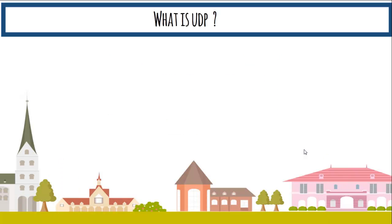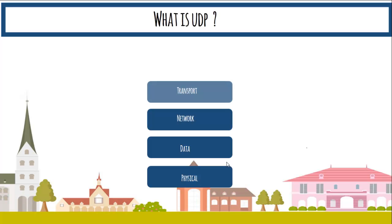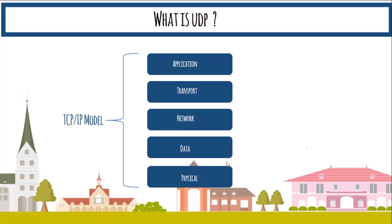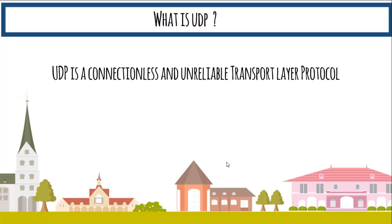Now we have five layers: physical layer, data layer, network layer, transport layer, and finally application layer — all part of the TCP/IP model. UDP falls in the transport layer. UDP is a connectionless and unreliable transport layer protocol. To understand what connectionless means, one first needs to understand what connection-oriented means.